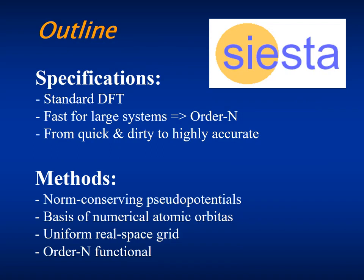SIESTA was designed to be a standard DFT code specialized in fast calculations for large systems, but also allowing highly accurate calculations. It uses non-conserving pseudo-potentials, a basis of numerical atomic orbitals, a uniform space grid for some integrals, and an order N functional for solving Schrödinger's equation.